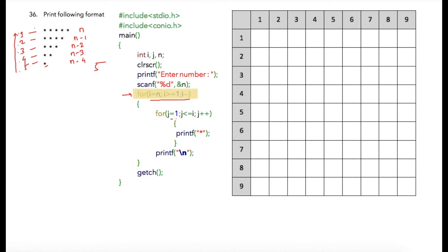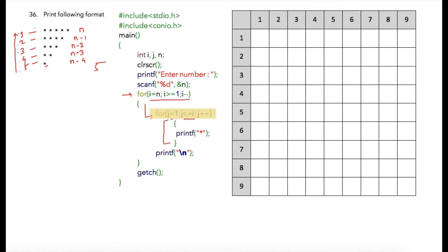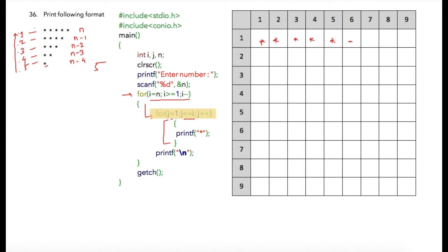Initially in the first loop, i will be initialized to five and the condition five greater than or equal to one is true, so control goes inside the loop. Because i equals five, the inner block will execute five times — from j equal to one till five — so the cursor will print a star five times. Once j becomes six the condition is false, then we print a newline character so the compiler moves to the next line. Then i is decremented to four and the second loop executes four times.